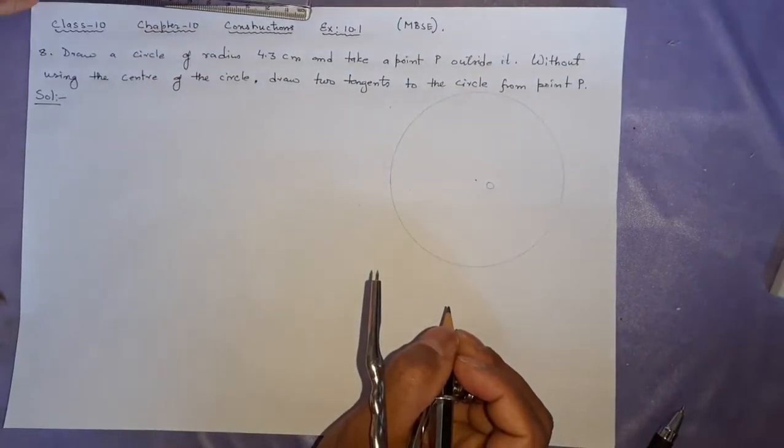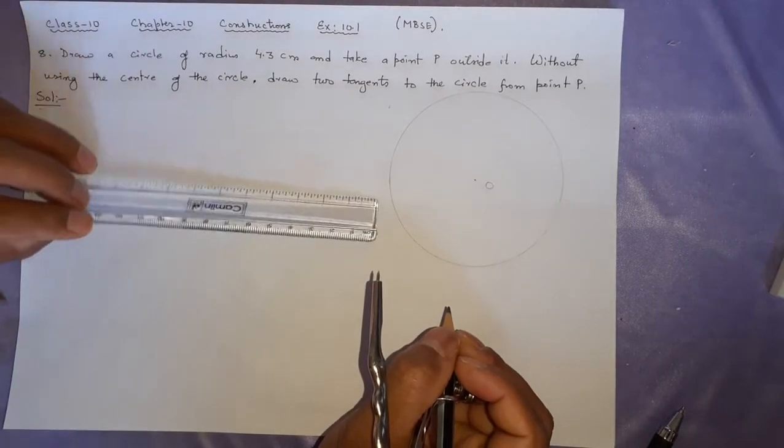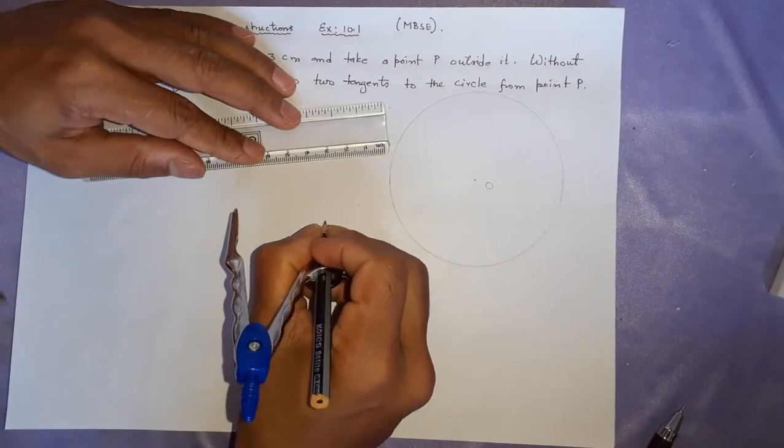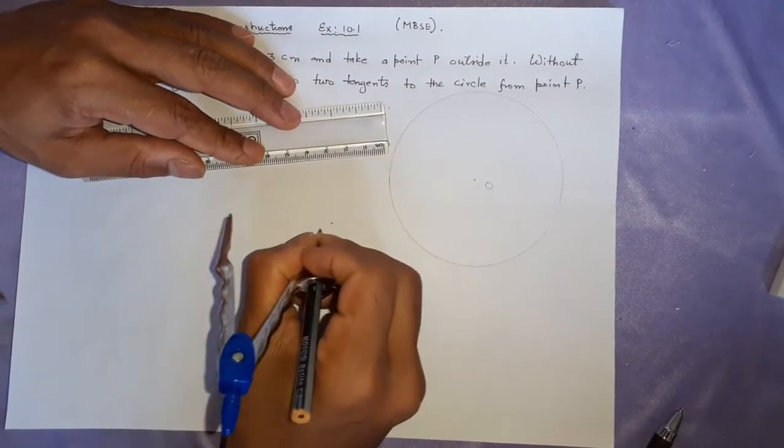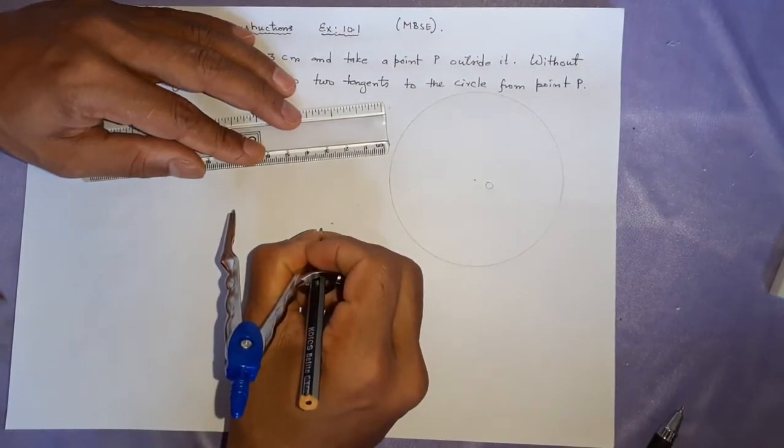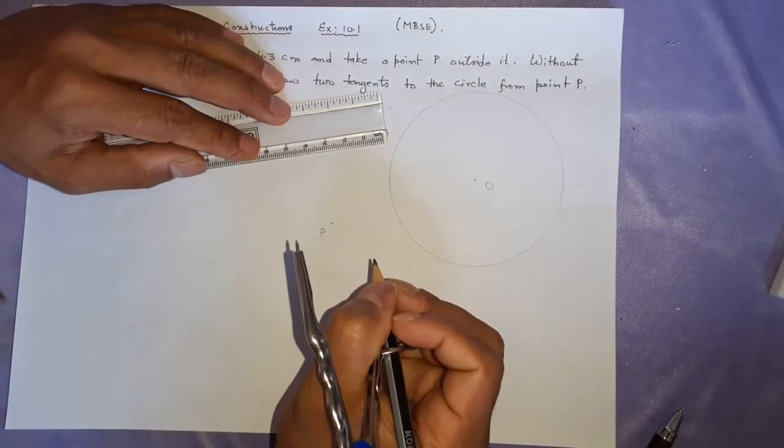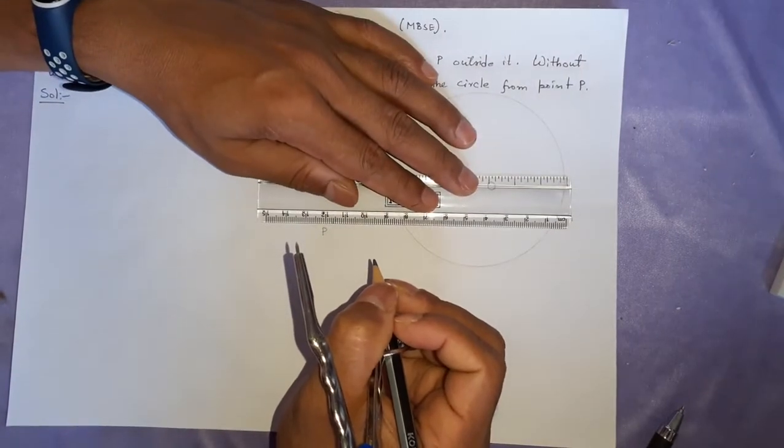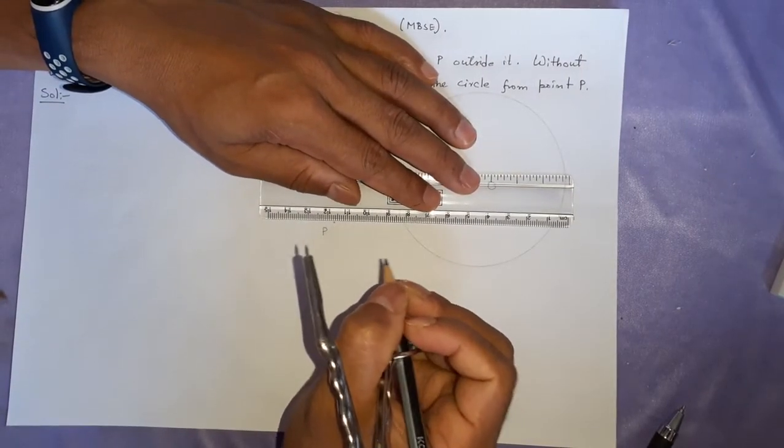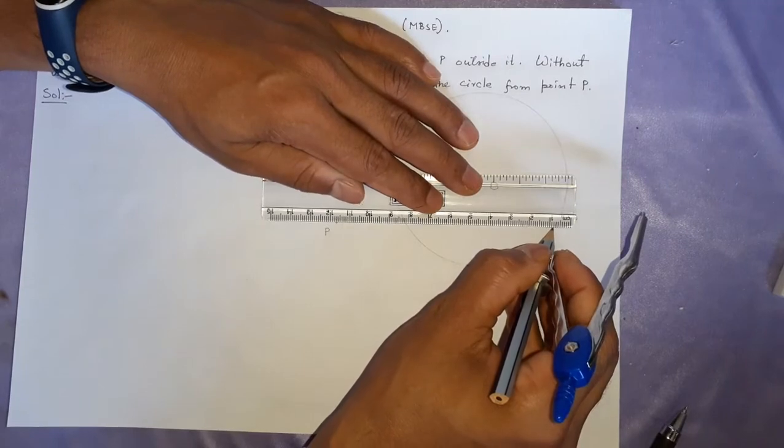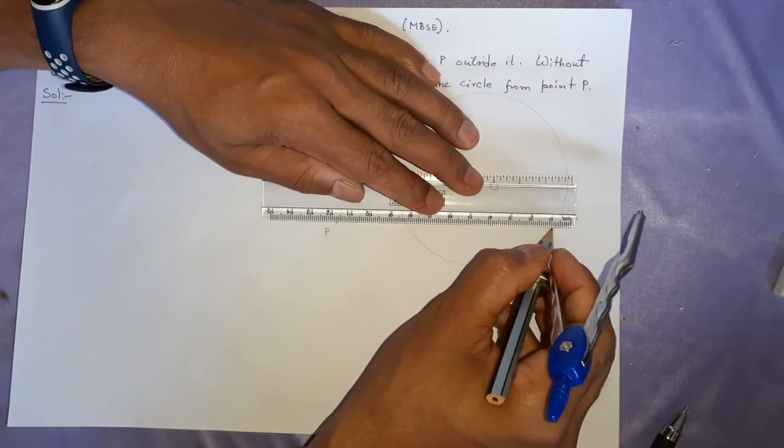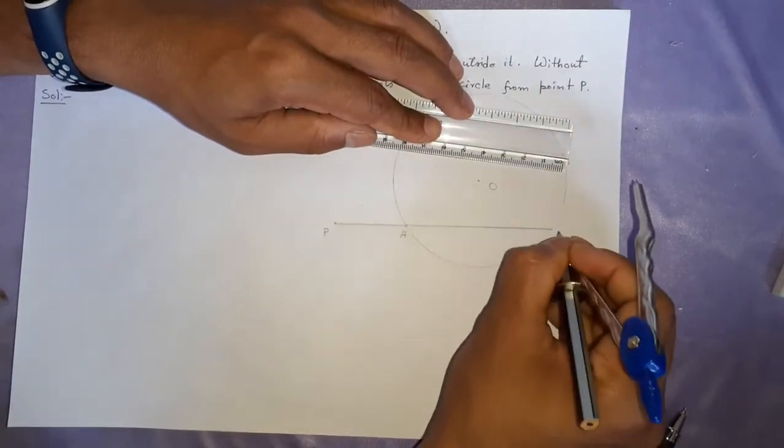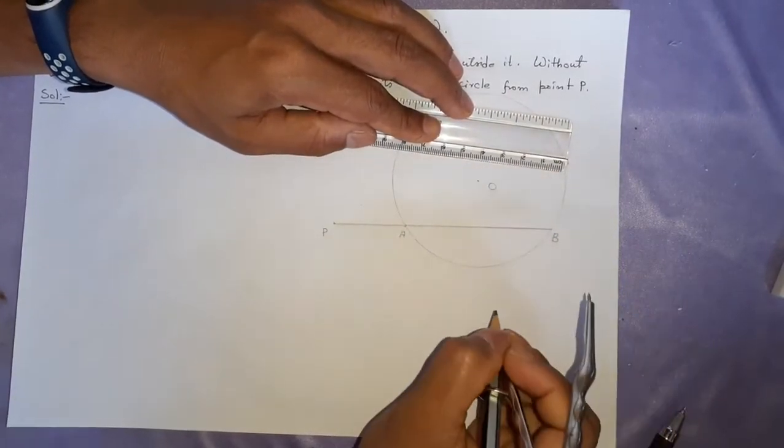After that any point you are going to take P. How far we have to take, nothing is written, so you can take anywhere. You will take somewhere here, here the point P. Then after that through the P you will draw a secant PAB. Secant means it will cut the circle at two places. From here it has gone to here. Here is A, here is B.